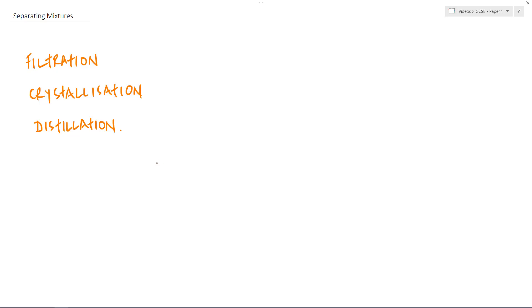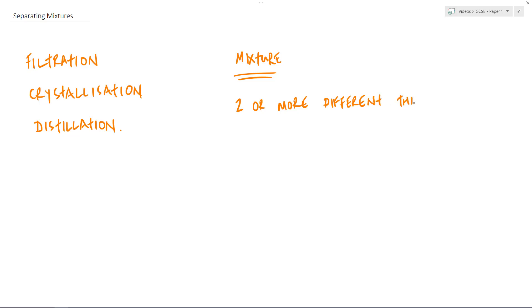A good starting place for the separation of mixtures is: what is a mixture? A mixture, in terms of a definition, is two or more different things - and these two or more different things are not chemically joined.